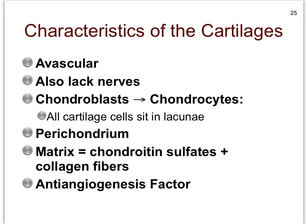The cartilages share one major feature with the epithelial tissues: they are also avascular. But what they do not share with the epithelial tissues is that they lack a nerve supply — epithelial tissues do have a nerve supply. The main cell type we see in the cartilages, and that we do not find anywhere else, are the chondroblasts that can further differentiate into the chondrocytes. You're not going to find cartilage cells in any of the other tissue types, just like you won't find bone cells — osteoblasts, osteocytes, osteoclasts — in any of the other connective tissue types.